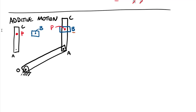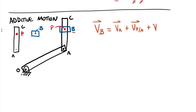Writing the equations for the additive motion system: it's most convenient to start with the point adjacent to P on the left-hand side. So V_B equals velocity of A plus velocity of P relative to A plus velocity of B relative to P (the slipping velocity). Cross-checking subscripts — multiplying through gives B equals B — confirming the correct terms.